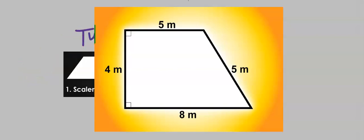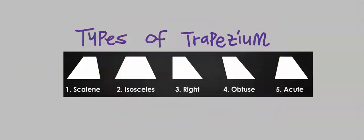There are different types of trapezium: scalene, isosceles, right, obtuse, and acute.